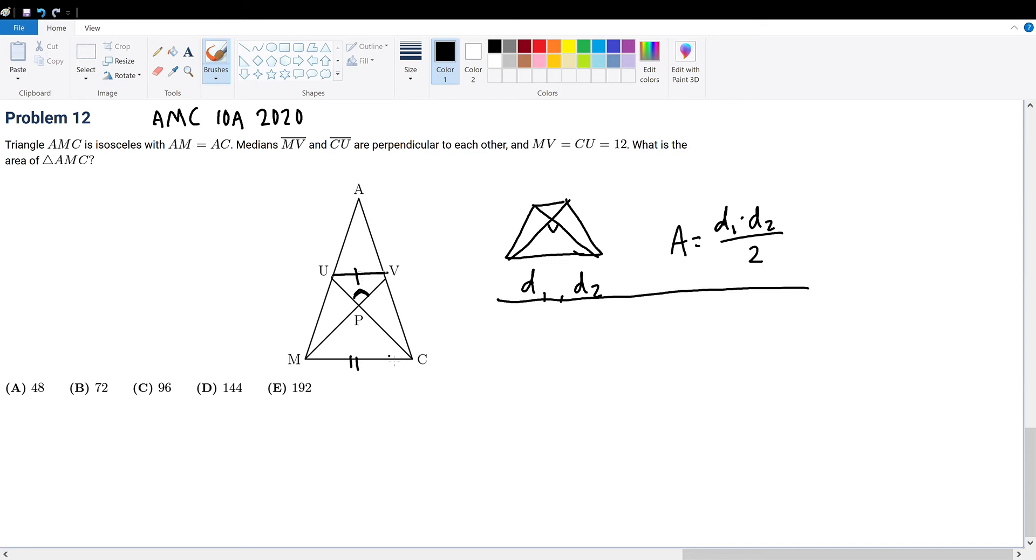By simply squaring the side ratio we get the area ratio. If we cube it we get the volume ratio, and so on for multiple dimensions. But all we care about is two dimensions, which is 1 to 4.